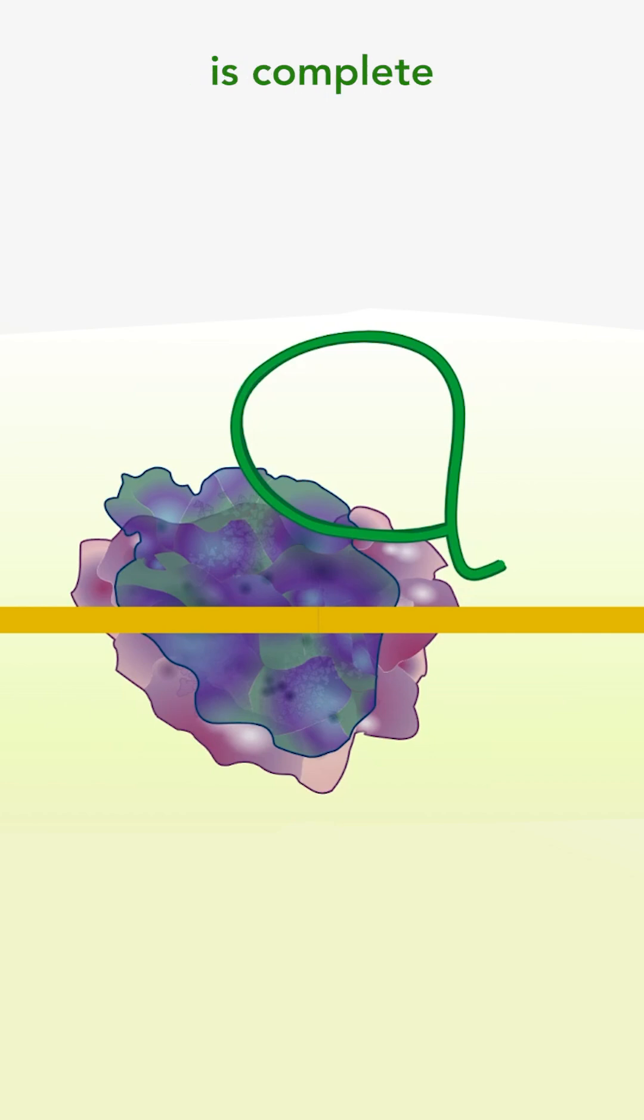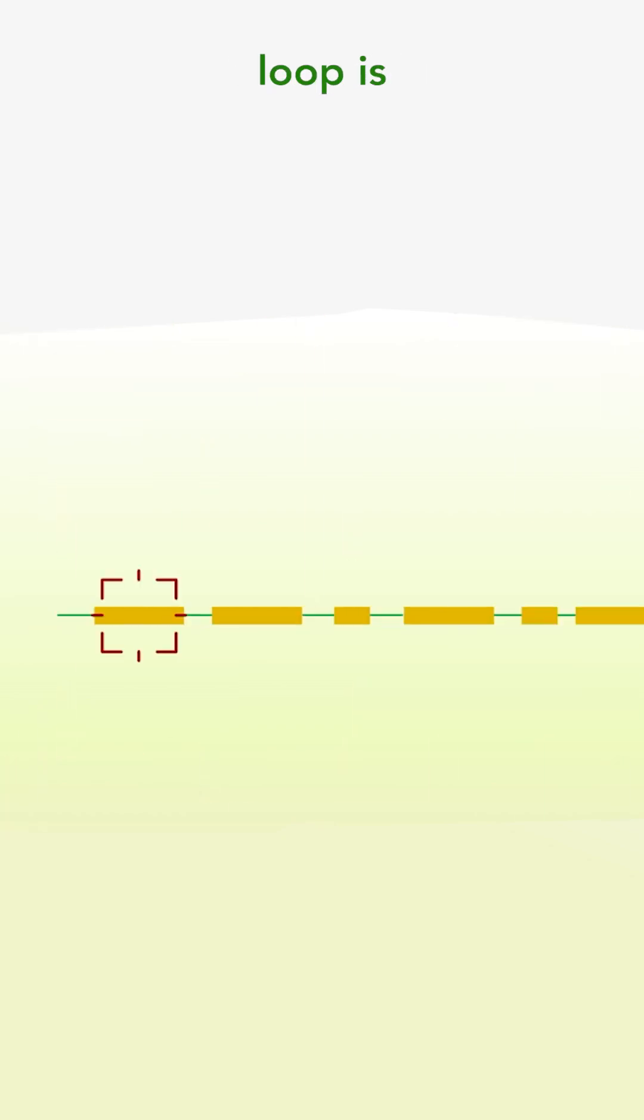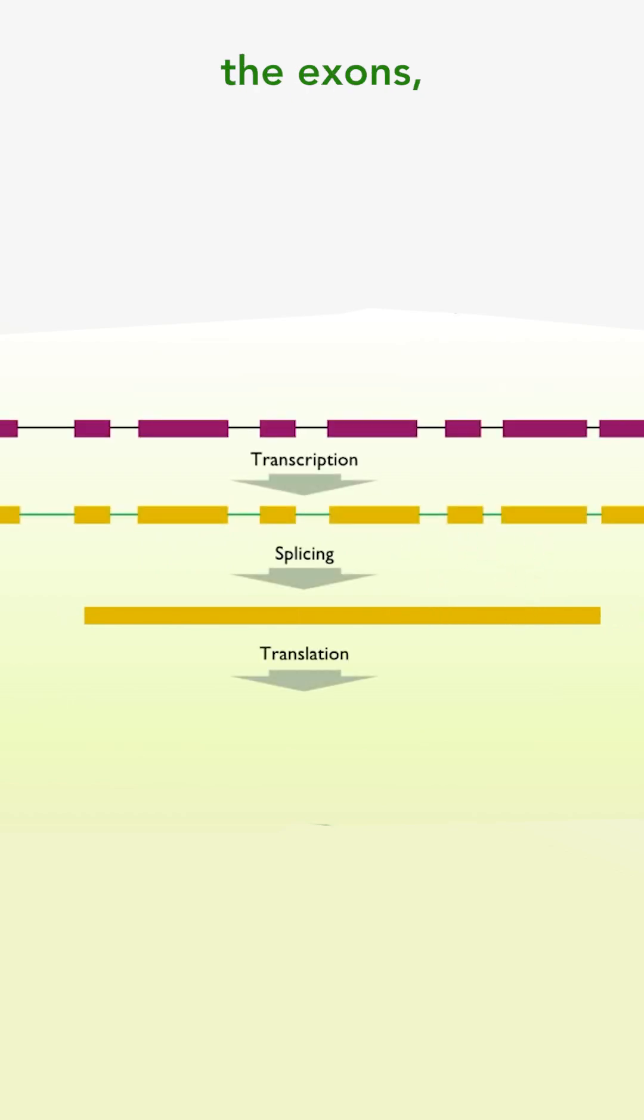After splicing is complete, the edited mRNA and intron are released, and the spliceosome disassembles. The lariat loop is also broken down. The edited mRNA only contains the exons, which are the complete instructions for proteins.